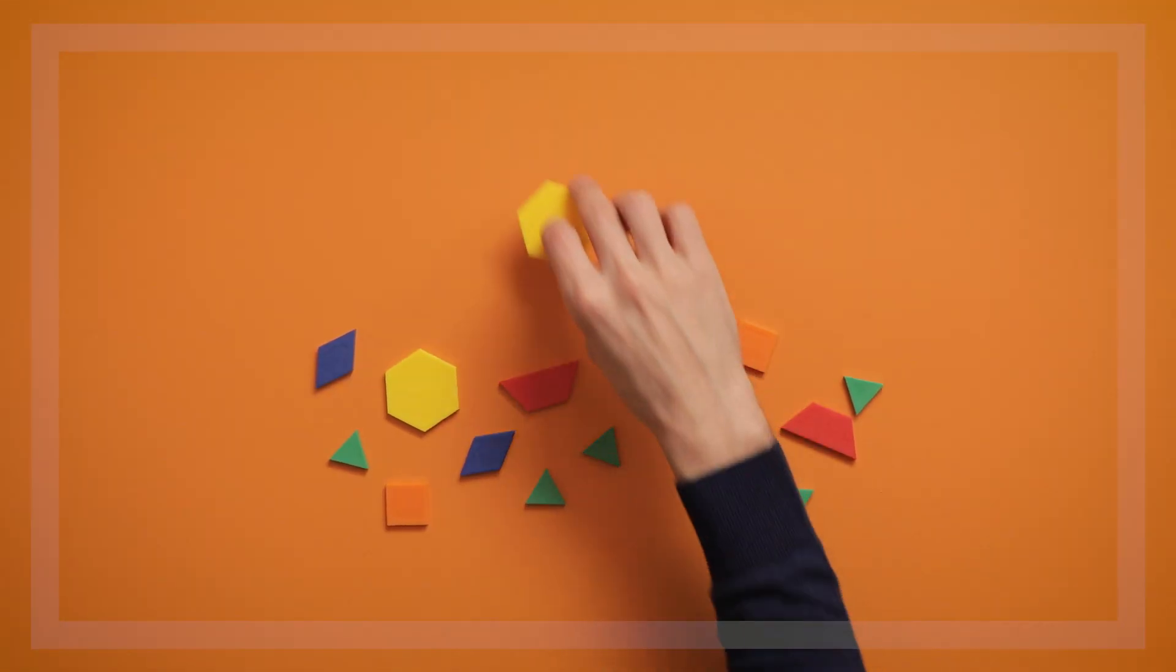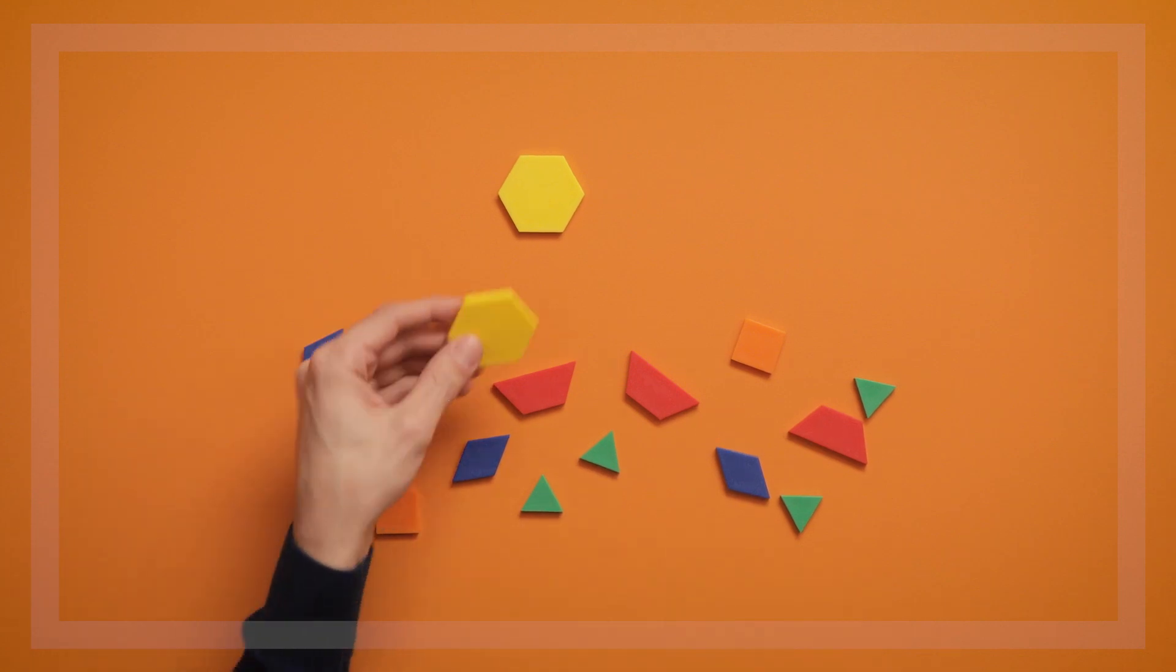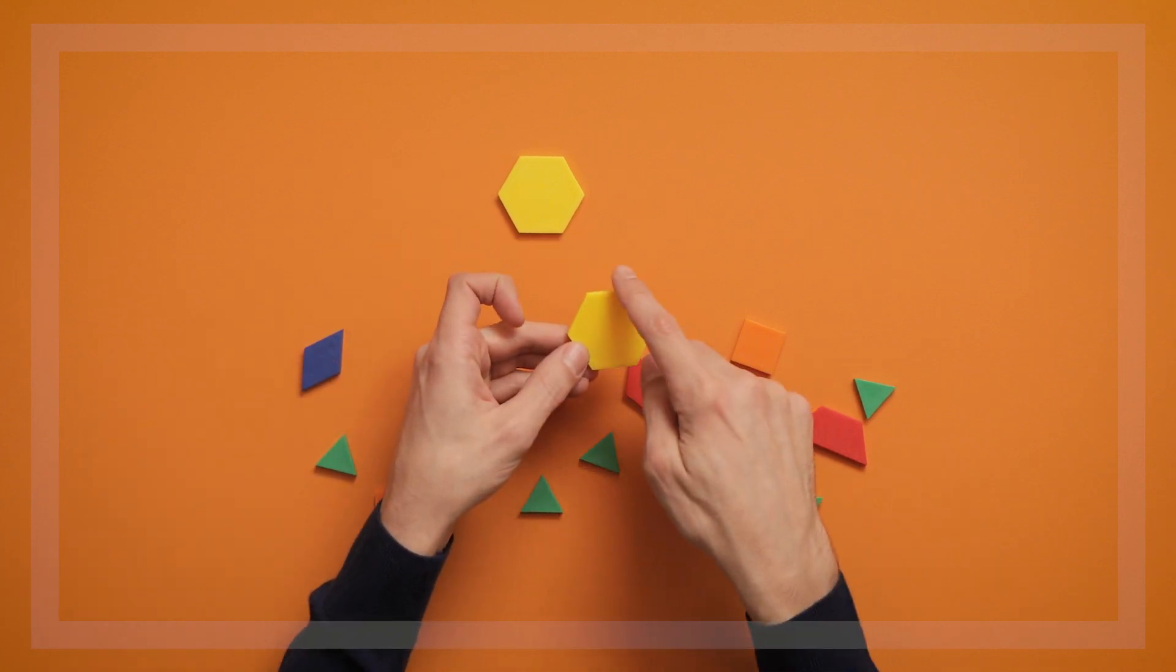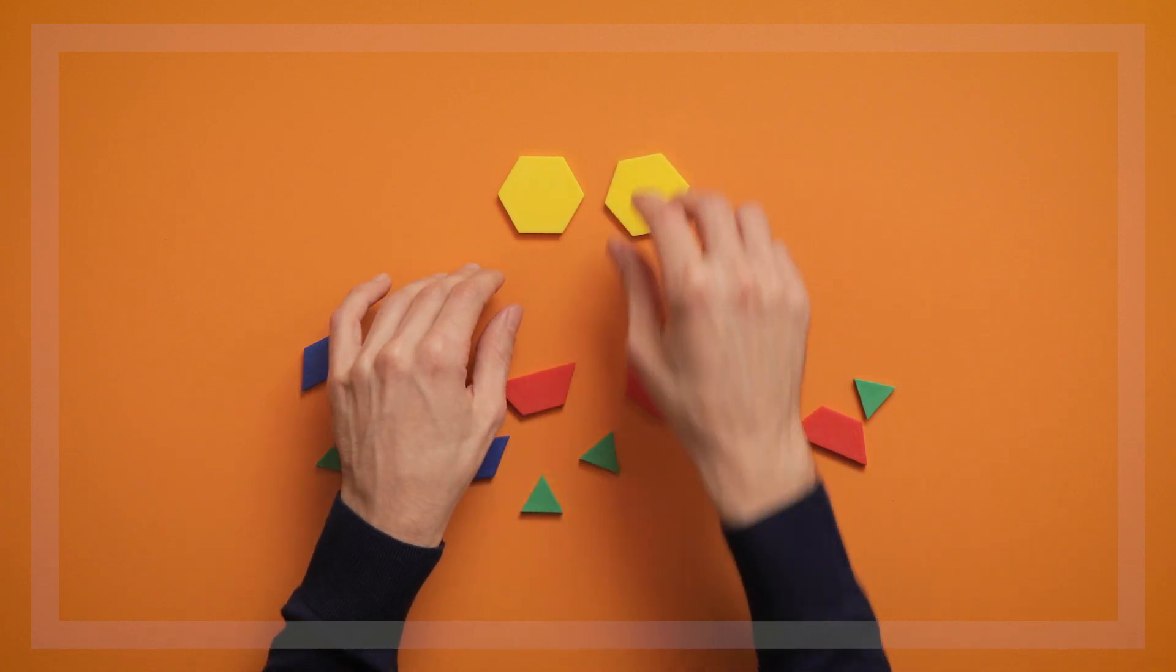Knowing the name of a shape is just a small piece of knowing about that shape. Children construct ideas about shapes by manipulating them during play and by noticing the different attributes of each shape.